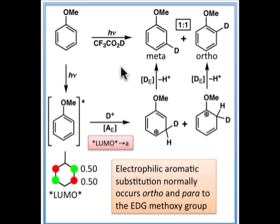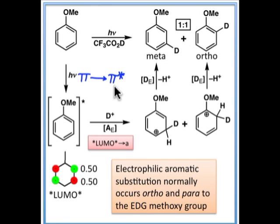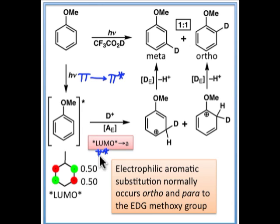How can we rationalize this result? Photoexcitation moves an electron from pi and pushes it up to pi star, and so that electron occupying pi star becomes extremely nucleophilic because it's very high in energy. Since pi star is the nucleophile, it's going to interact with the empty orbital on our electrophile — in this case a proton or a deuteron — and so the Ae step is going to be governed by the coefficients on pi star.